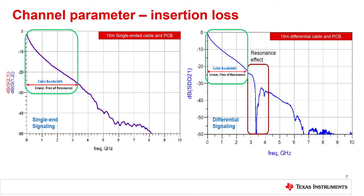Now let's look in more detail at the channel insertion loss parameter. At high frequency, the transmission loss of a channel is dominated by the dielectric loss. Hence, the insertion loss characteristic of a channel behaves as a low-pass filter. The FPD-Link receiver has a built-in equalizer circuit, which we covered in the last module, and implements a high-pass filter to counteract the low-pass filter effect from the channel. The adaptive equalizer also includes a control loop that automatically selects a high-pass filter setting to match the cable's loss characteristic. The receiver can equalize and compensate the insertion loss within a linear range of channel loss characteristics. If there are abrupt discontinuities or resonant effects that create sharp drops in the channel loss, the equalizer can no longer work effectively.